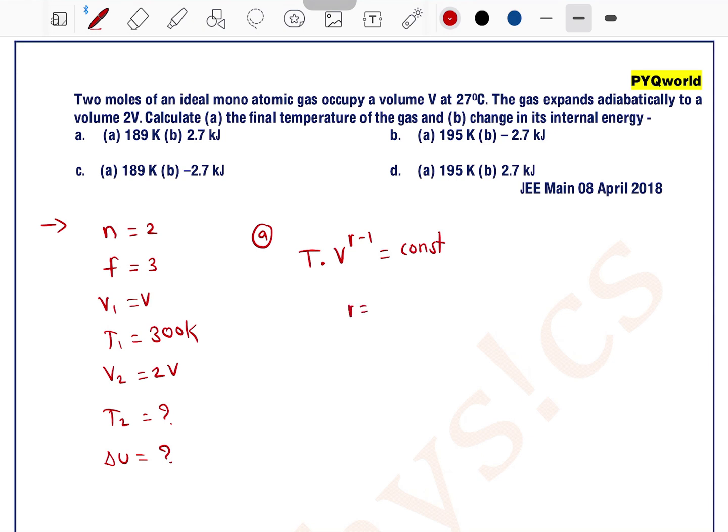So first we will find gamma. What is gamma? Gamma is equal to f plus 2 divided by f. F is 3, so this is equal to 5 by 3.